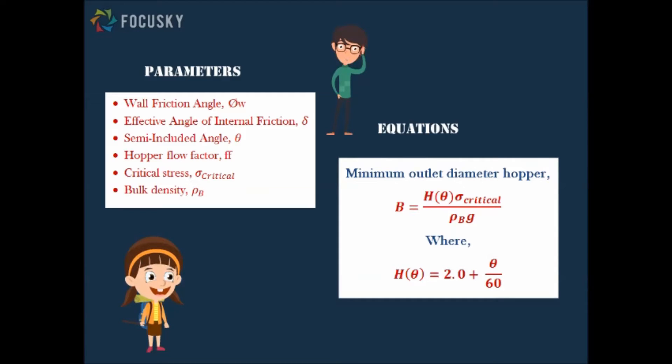All parameters obtained can be used to determine the minimum outlet diameter of hopper given by equation below, where H theta is a factor determined by the slope of the hopper wall. That's how the outlet diameter of the hopper can be calculated.